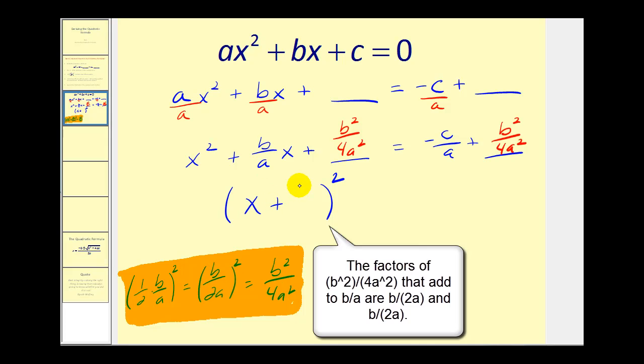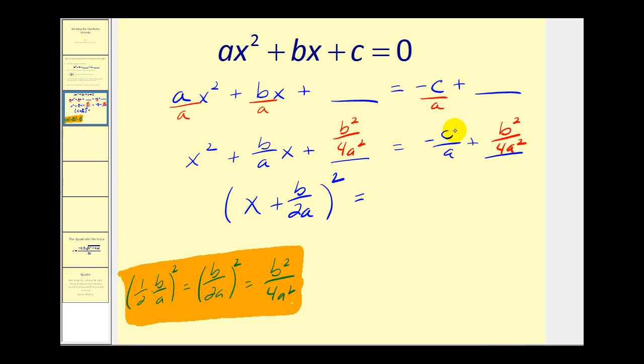So this will be plus B over 2A. On the right side we have to add these fractions together, so we'll need a common denominator which is 4A squared. Multiply this by 4A over 4A. Notice we have a common denominator of 4A squared. Our numerator is negative 4AC plus B squared, but I'm going to write that as B squared minus 4AC.